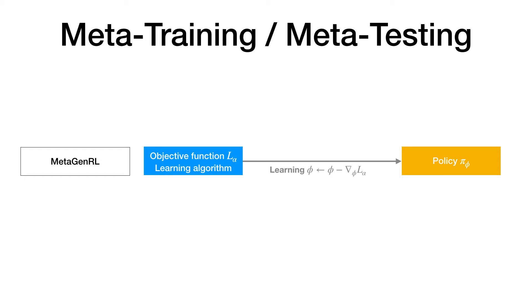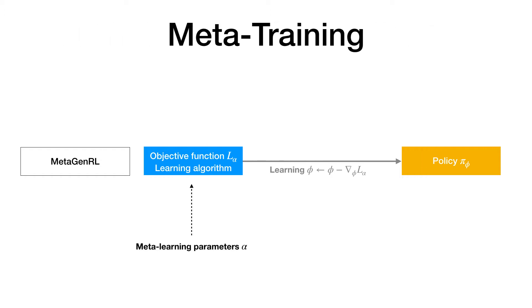Meta-general has two phases, meta-training and meta-testing. We first look at meta-training, which involves meta-learning the parameters alpha of the objective function.